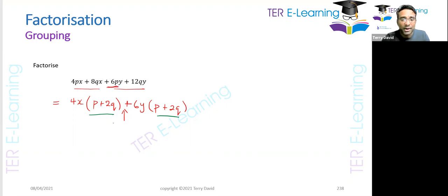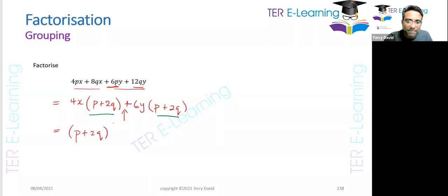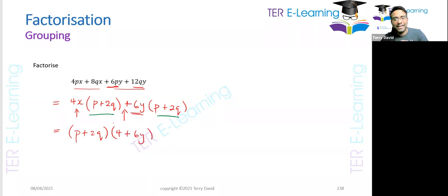In this case, I'm going to put a positive sign because +6y multiplied by p gives +6py, and +6y by 2q gives +12qy. So the final answer is (p + 2q)(4x + 6y). This method is called factorizing by grouping.